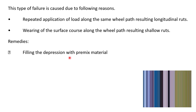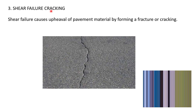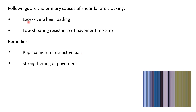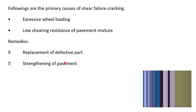Shear failure means a continuous crack appears in terms of shear. Causes are excessive wheel loading and low shearing resistance. Remedies are replacement of the defective part and strengthening of the pavement — to increase shear resistance you need to inject cement grout, and some defective part may be removed.